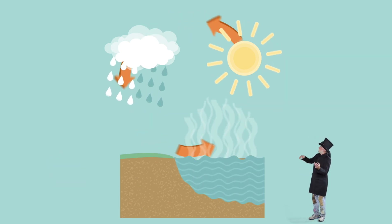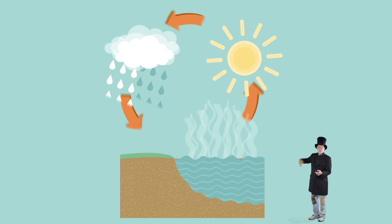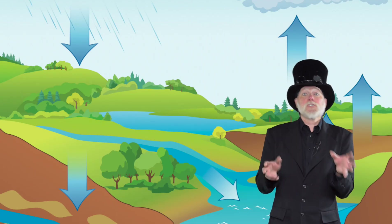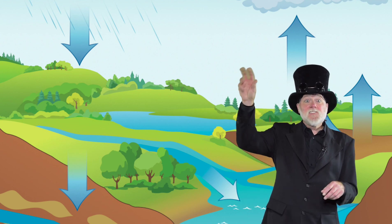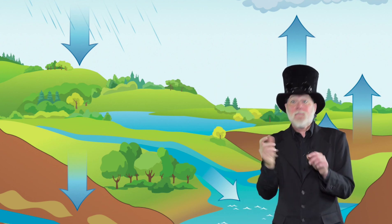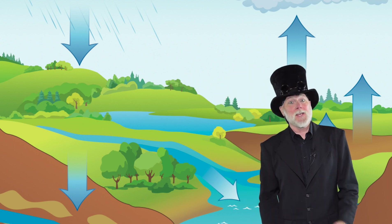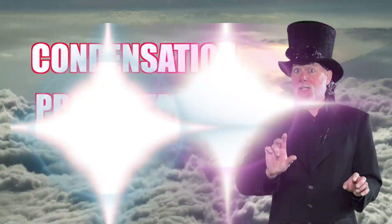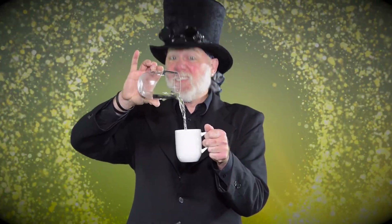The water cycle is the process by which water moves continuously through the earth and the atmosphere. It works like this: water condenses in the clouds, then precipitates down to the earth, then evaporates back up to the clouds again. That's condensation, precipitation, evaporation — a continuous and ongoing natural earth process. The water cycle is kind of amazing.